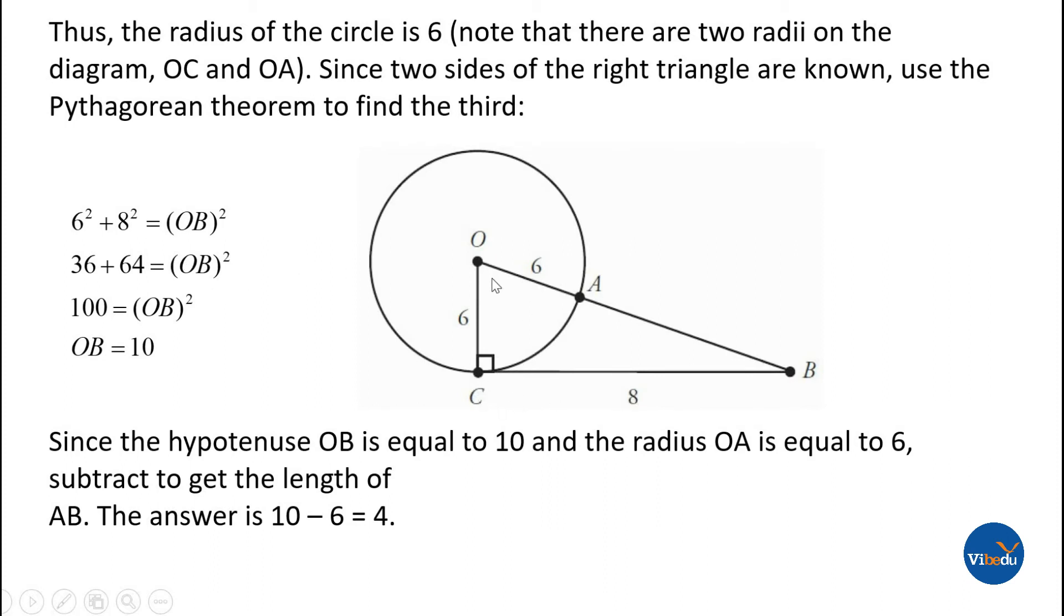We can use the Pythagorean theorem: 6 squared plus 8 squared equals OB squared. So 36 plus 64 equals OB squared, which equals 100. That means OB equals 10.